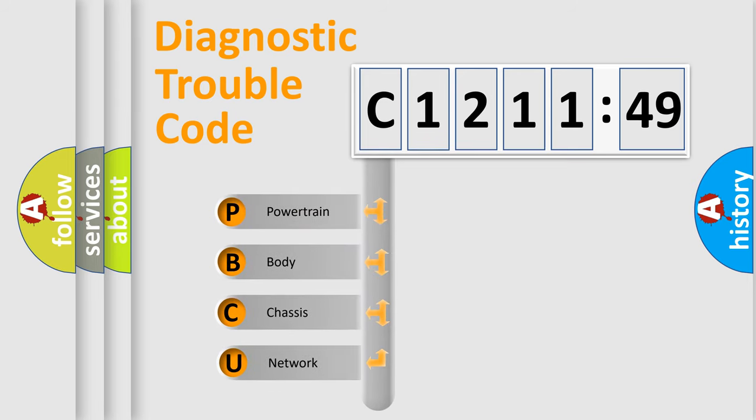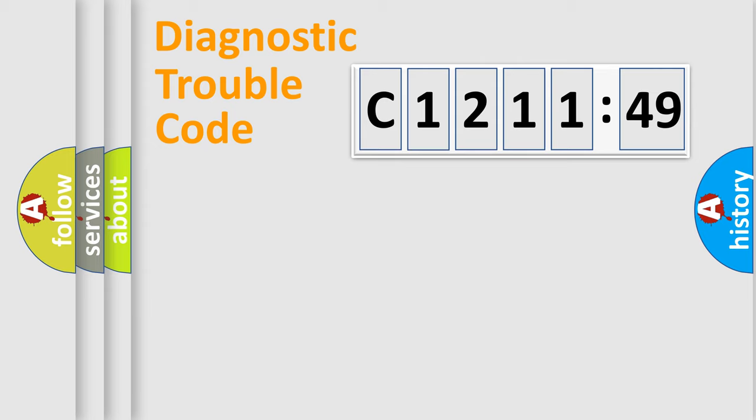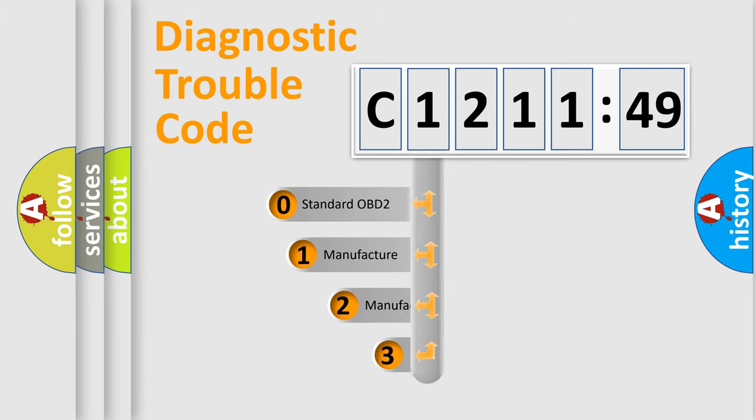First, let's look at the history of diagnostic fault code composition according to the OBD2 protocol, which is unified for all automakers since 2000. We divide the electric system of automobile into four basic units: Powertrain, Body, Chassis, and Network.